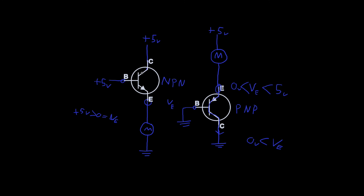Current then flows through the transistor and down to the motor, and the motor will run. To recap - because I know this is a lot - these are the conditions that will turn on your transistor, and the opposite would turn it off. For an NPN type, when V_B is greater than V_E, the system is on.